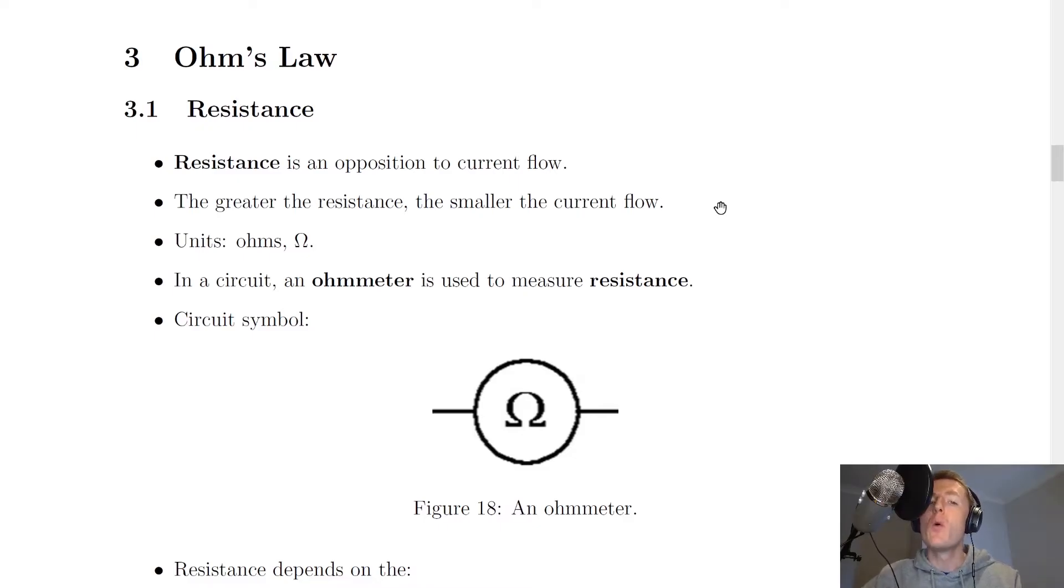It's where if one increases the other one decreases, so if one goes up the other one must go down. So the greater the resistance to the flow of current, then the smaller the current that can flow.